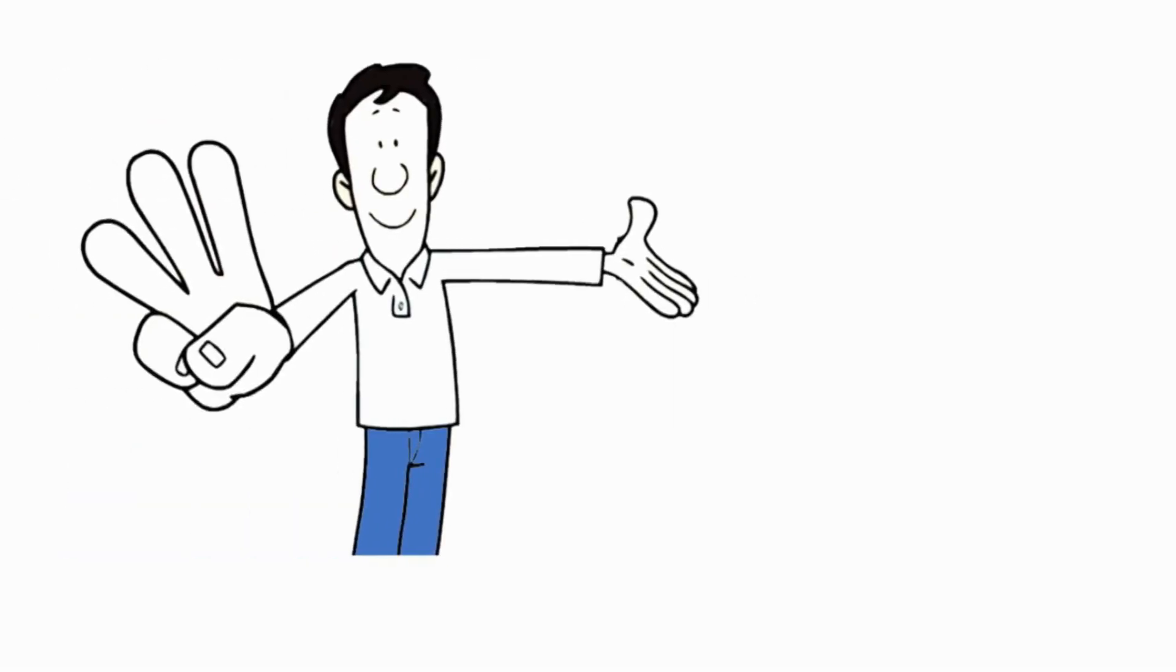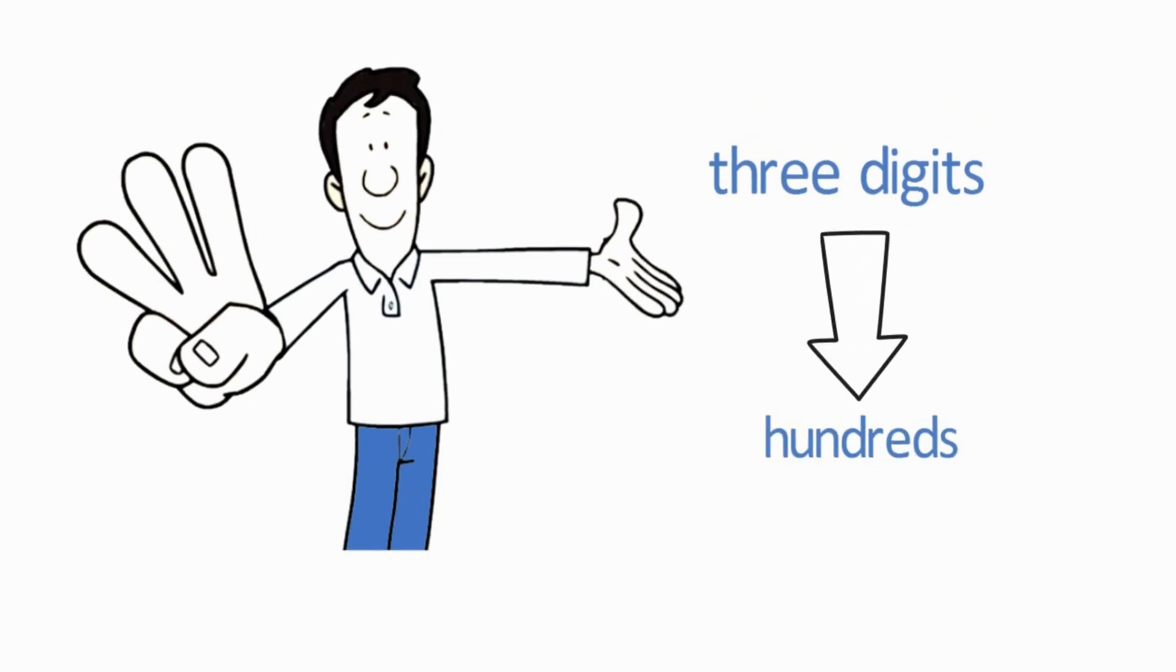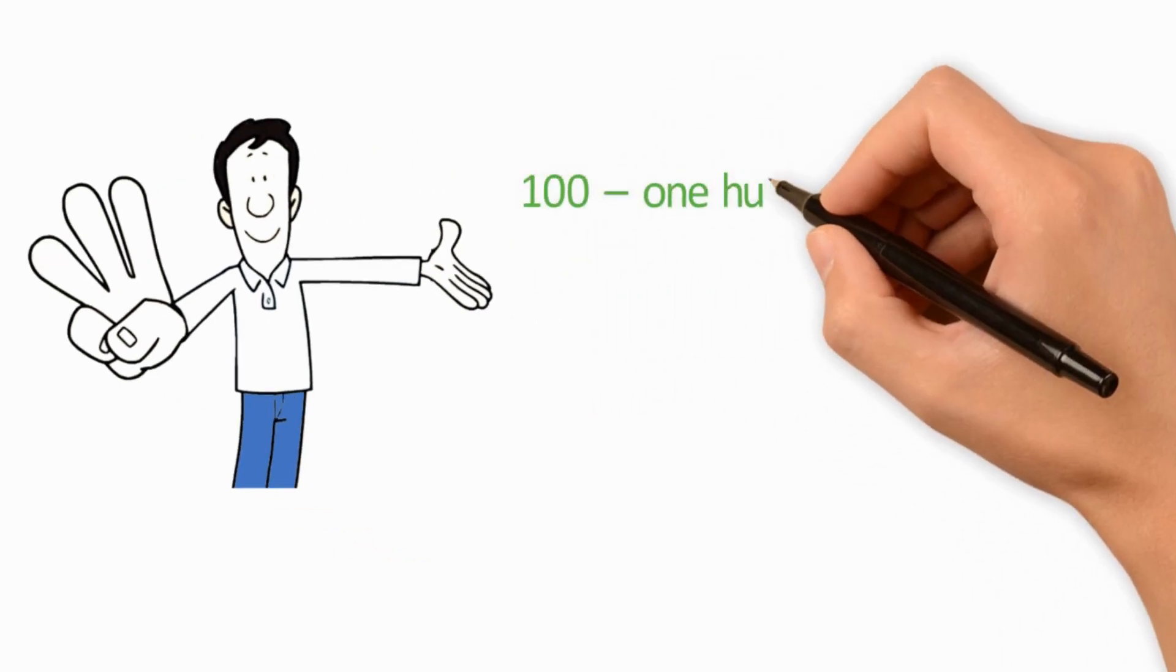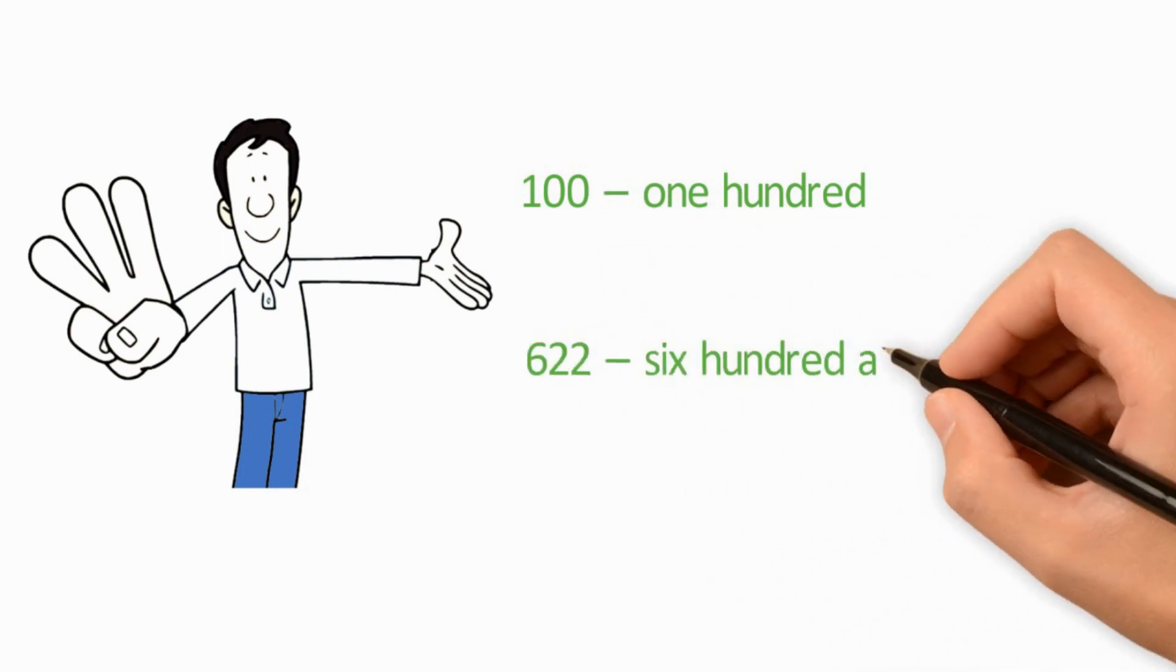When the numbers get to 3 digits, they are called hundreds. For example, 100, 622.